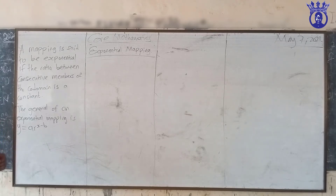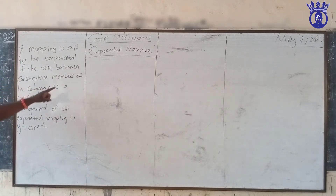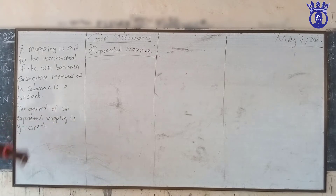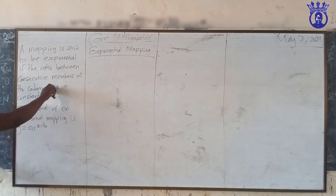A mapping is said to be exponential if the ratio between consecutive members of the co-domain is a constant. Most preferably we use the range.